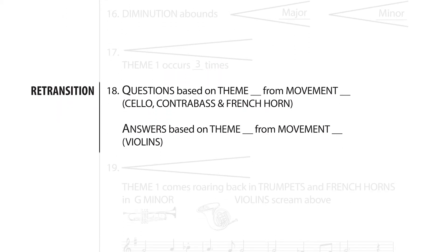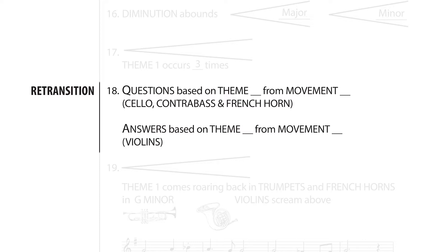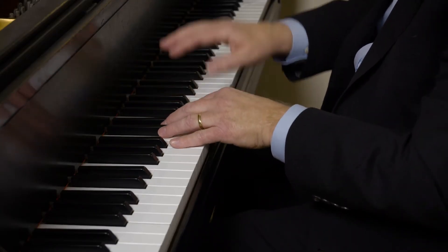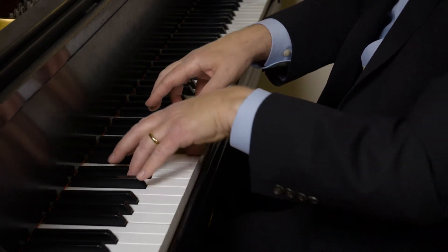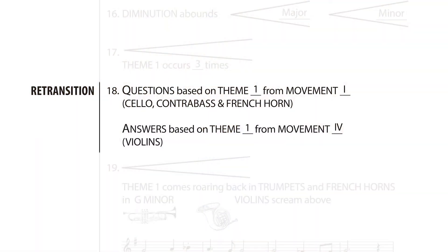At number 18 in the listening guide, you see the word 're-transition.' This is a designation scholars give to that part of the development in which composers start moving toward the recapitulation, the third major part of the recipe. Sometimes composers wind down the tension level. But Dvorak is just getting started with tension building. Fill in the blanks at number 18. The question is a shortened version of Theme 1 from Movement 1, followed by a diminution version of Theme 1 from Movement 4.